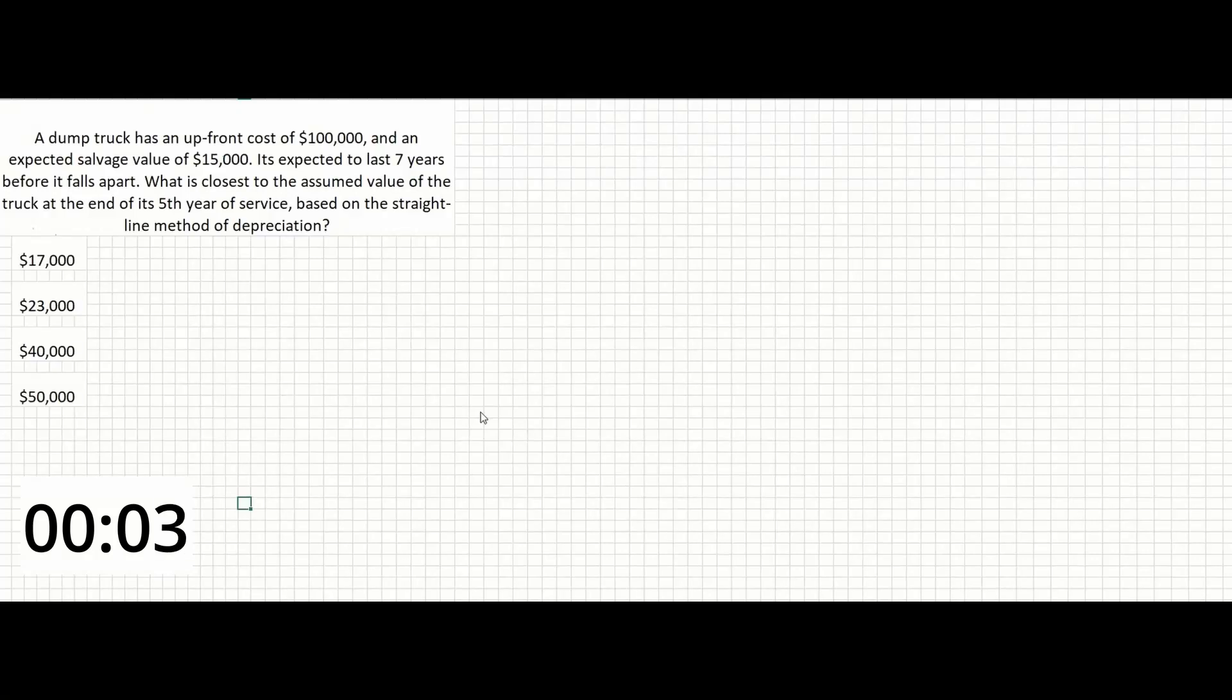Okay guys, in this problem a dump truck has an upfront cost of $100,000 and an expected salvage value of $15,000. It is expected to last seven years before the truck falls apart. What is the closest to the assumed value of the truck at the end of its fifth year of service based on the straight-line method of depreciation?